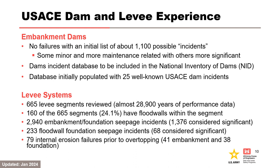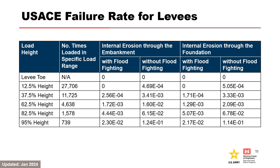This estimate does not include any years where the loading could not be accurately estimated or there was no reliable documentation of performance. The number of seepage incidents for levee embankments and flood walls is shown, along with the number of failures due to internal erosion, with embankment failures about equally distributed through the embankment and through the foundation. Based on the USACE levee data reviewed so far, failure rates were established for internal erosion PFMs with and without flood fighting as a function of levee height. For internal erosion through the embankment, the failure rate at a loading of 95 percent of the levee height is about 2 percent with flood fighting and 12 percent without. For both locations, the difference between failure rates with and without flood fighting is about one order of magnitude.